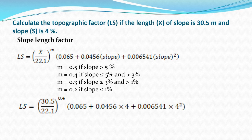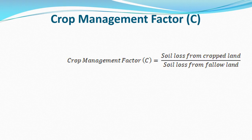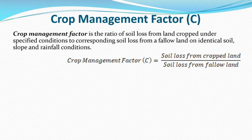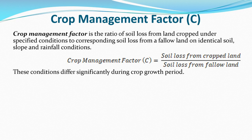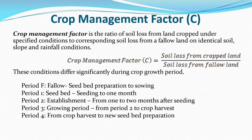The Crop Management Factor C is the ratio of soil loss from land cropped under specified conditions to corresponding soil loss from fallow land under identical soil, slope, and rainfall conditions. These conditions differ significantly during crop growth periods: Period F is fallow, Period 1 is seedbed (up to 1 month after seeding), Period 2 is establishment (1–2 months after seeding), Period 3 is the growing period (2 months to harvest), and Period 4 is from harvest to new seedbed preparation.